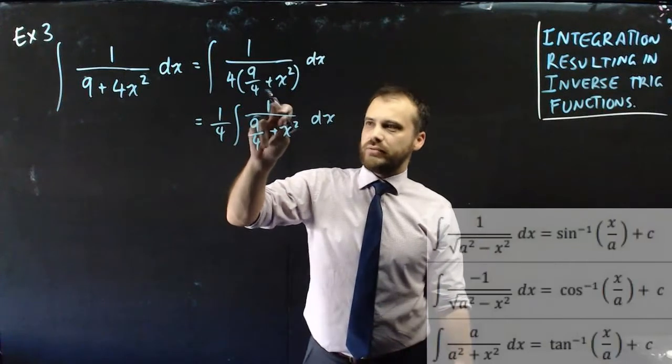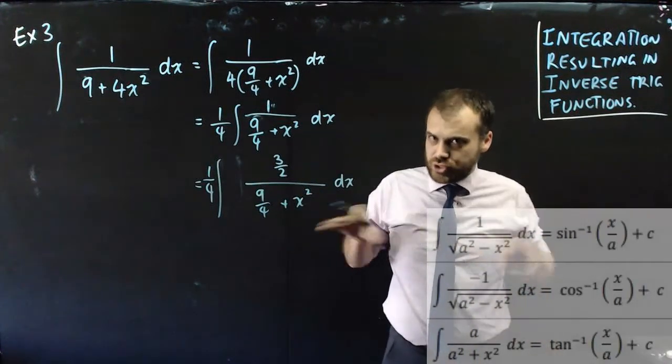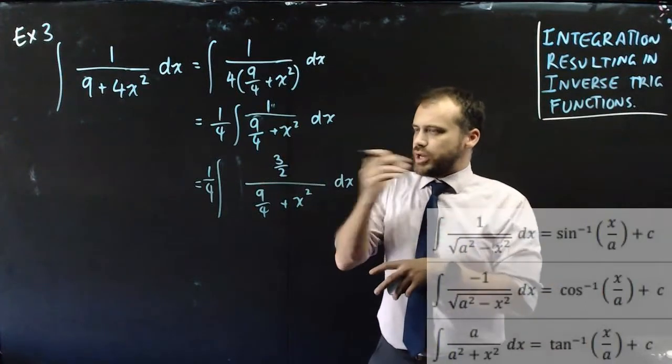But we have an a squared value of 9 on 4 but we have this value at the top just being 1. That value needs to be the square root of that value. Now, if I just straight up just change it magically like that well, I've just straight up changed the value of the integral. It's broken. It's no good. So how can I fix it?